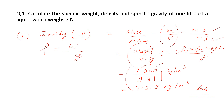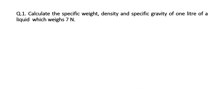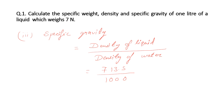Now for the third part of the question — specific gravity. Specific gravity is defined as the ratio of density of liquid to the density of water, where water is the standard fluid. We put the density of liquid found in part two, 713.5 kg/m³, and the density of water, 1000 kg/m³. After solving, we get 0.7135 as the specific gravity.